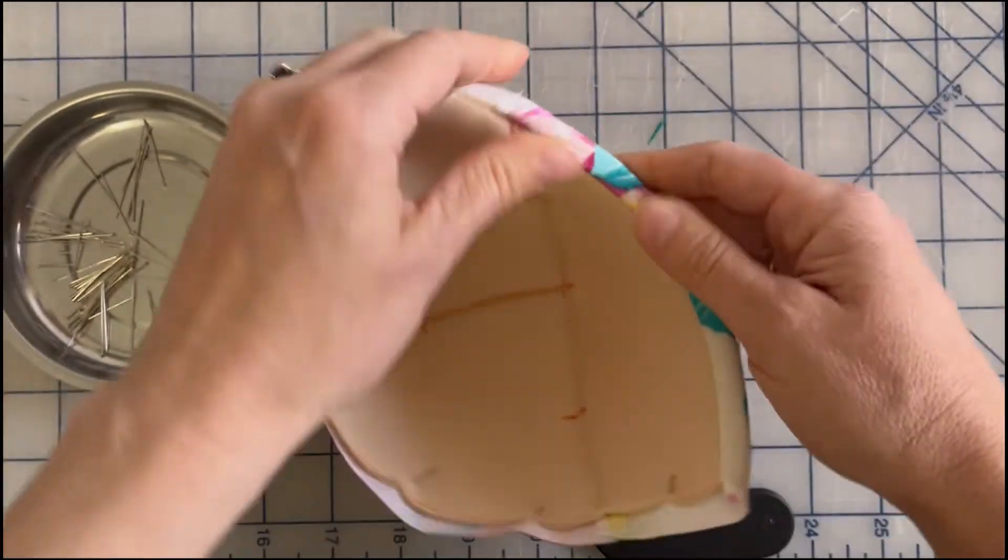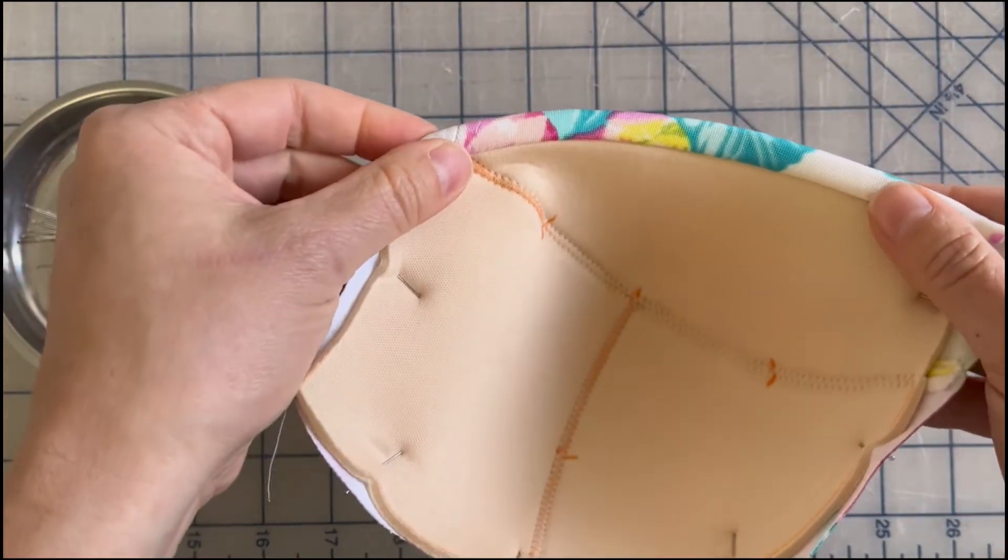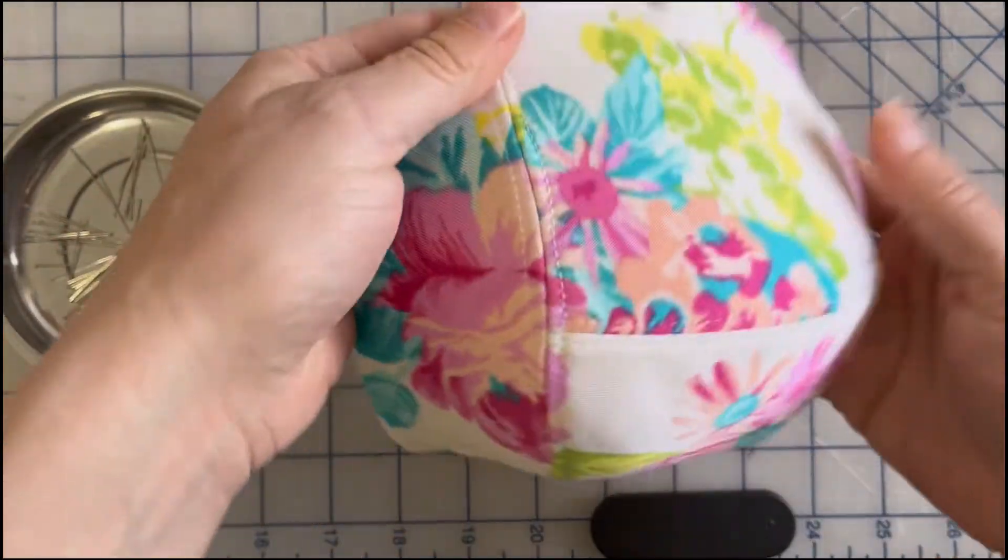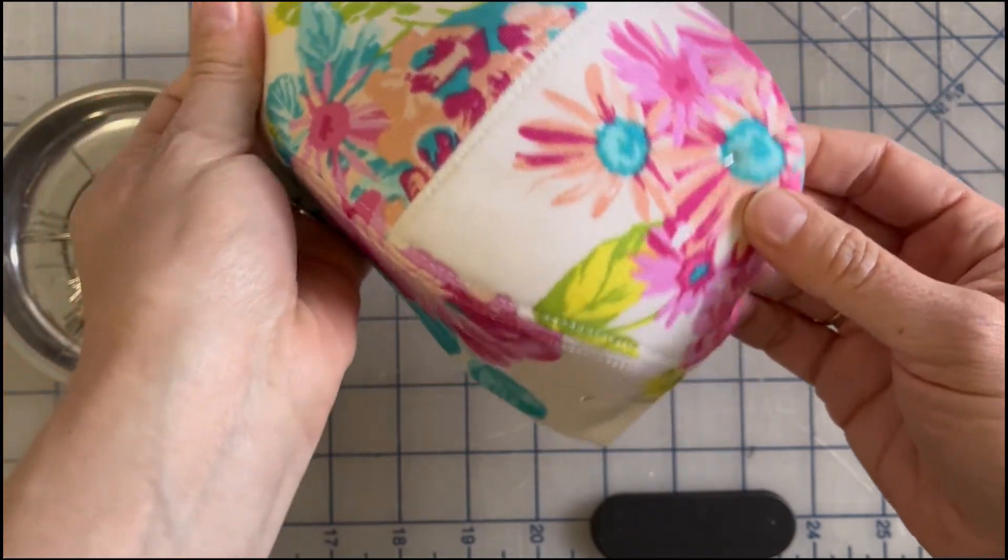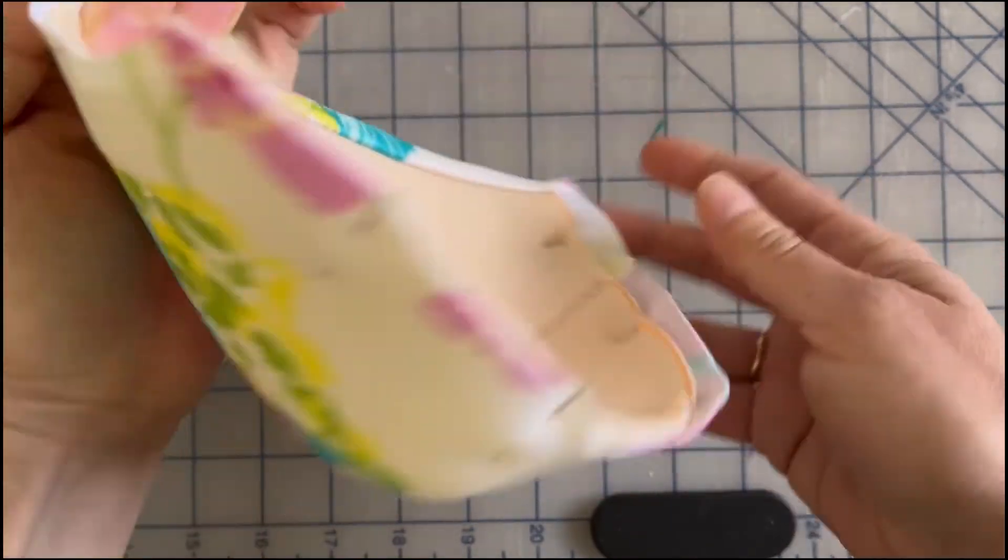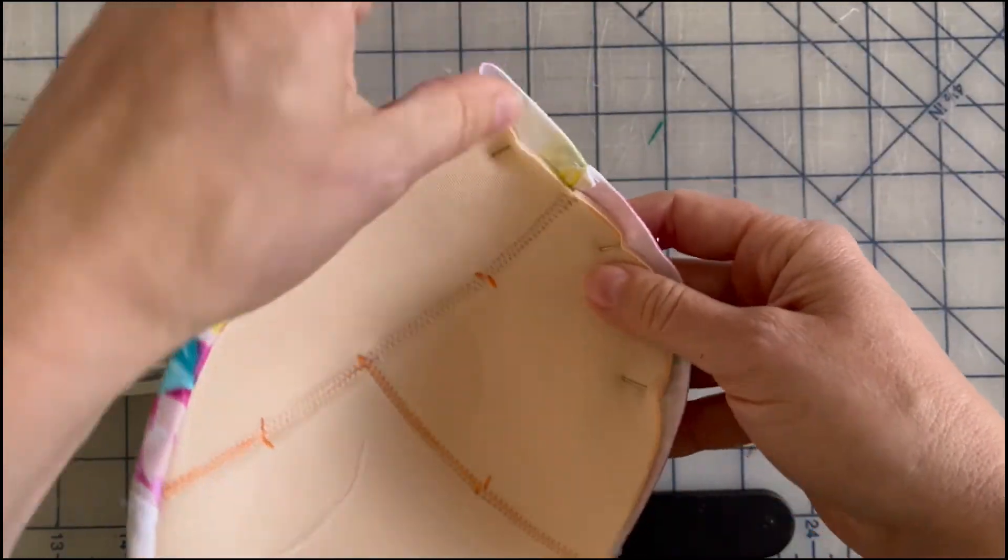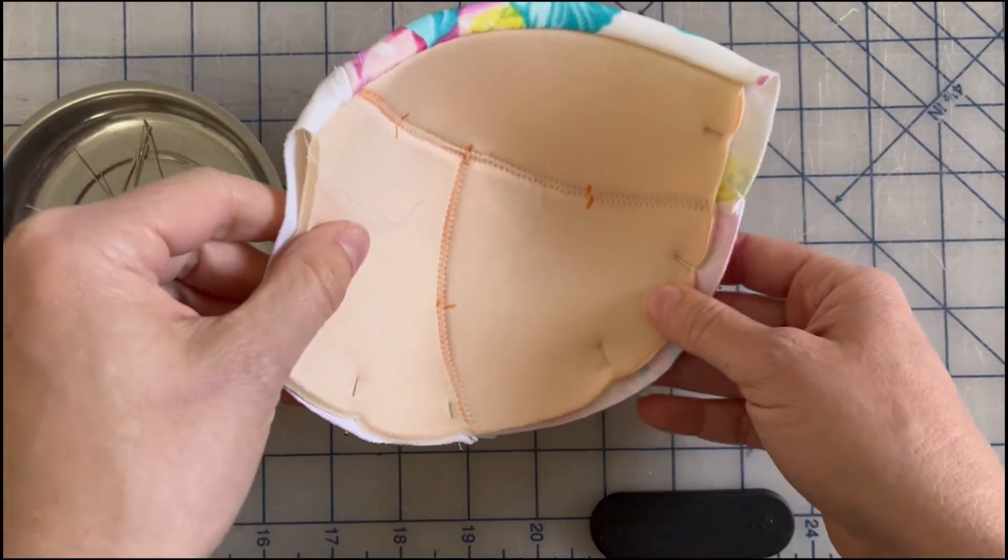Looks good. And there's our nice rolled edge. And the next thing I will do is baste around these raw edges to connect the cover and the cup, and then I will trim away the excess and continue on with my pattern.